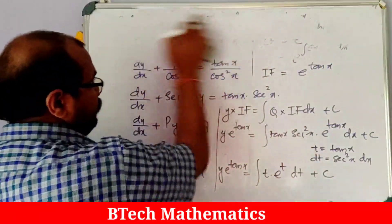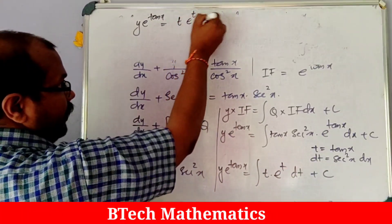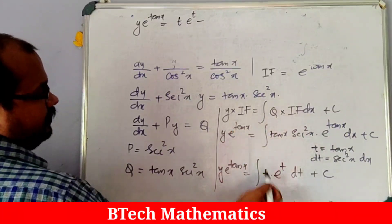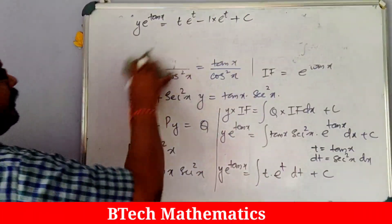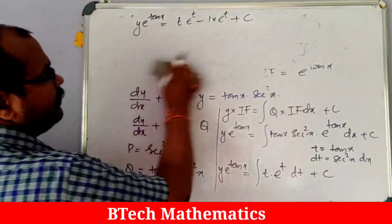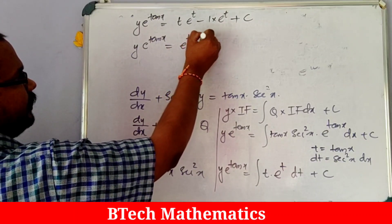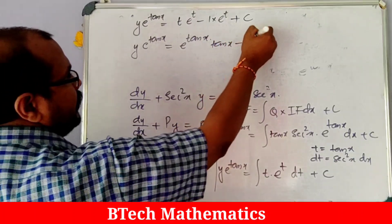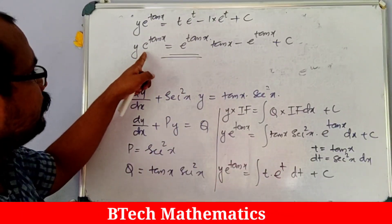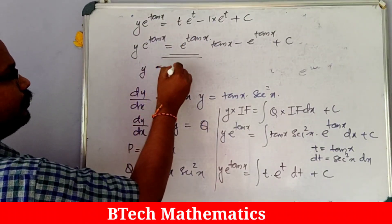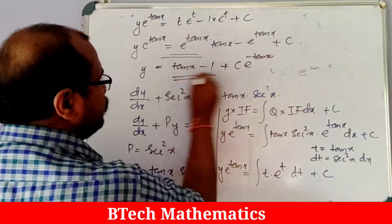Integrating by parts: ∫ t · e^t dt = t · e^t − e^t. Substituting back t = tan x: y · e^(tan x) = e^(tan x)(tan x − 1) + C. Dividing throughout by e^(tan x) gives the simplified answer: y = tan x − 1 + C · e^(−tan x).